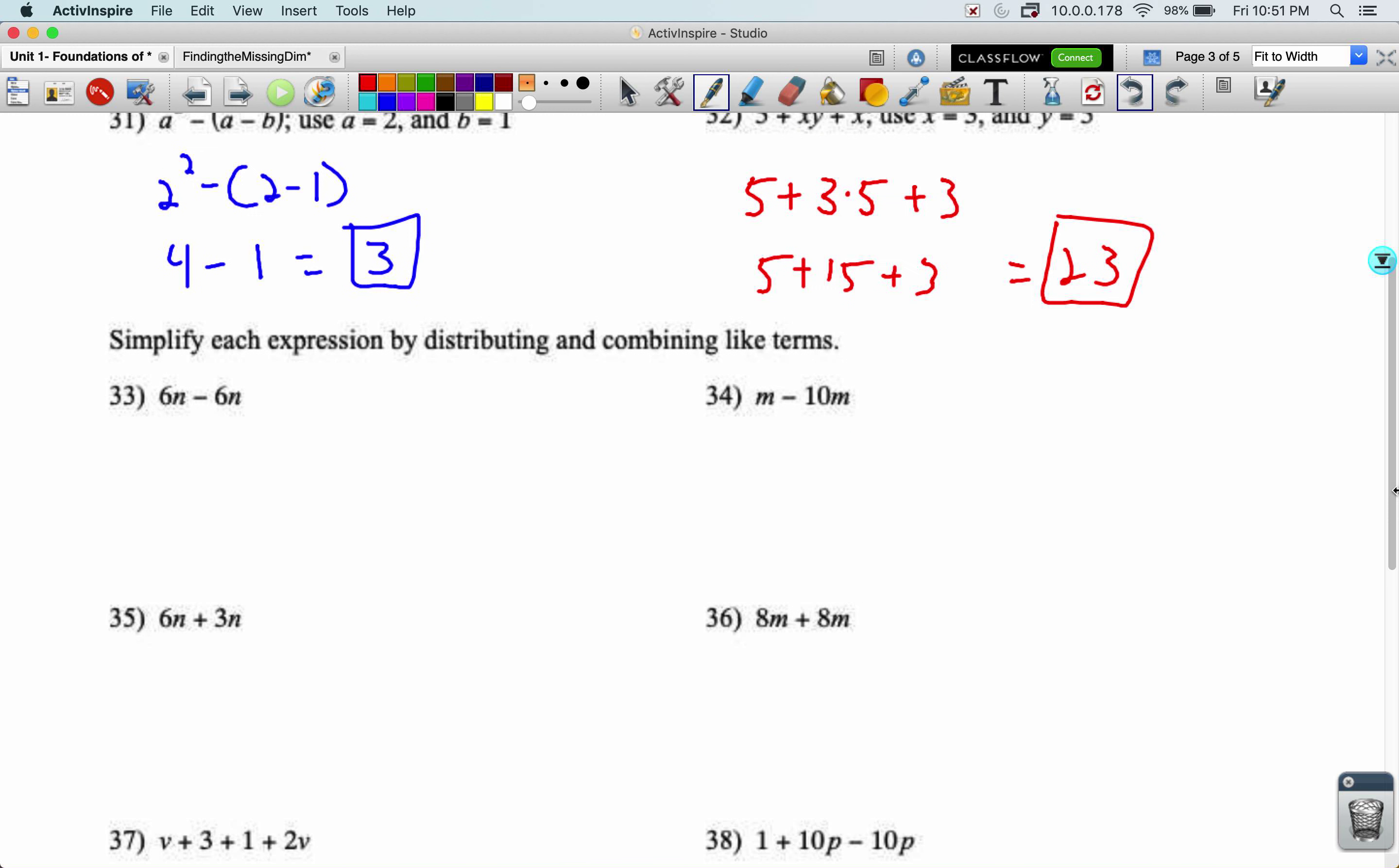Simplify each expression by distributing or combining like terms. Problem 33. These are like terms because they got the same variable. So I can just combine their coefficients. Six minus six is zero. So I will write zero and zero is just zero.